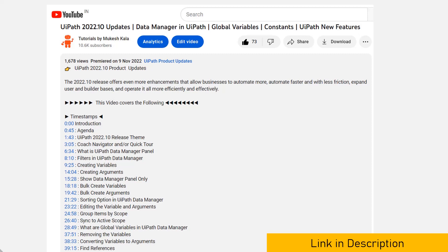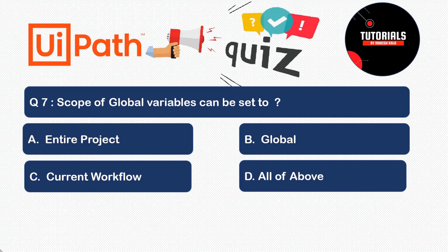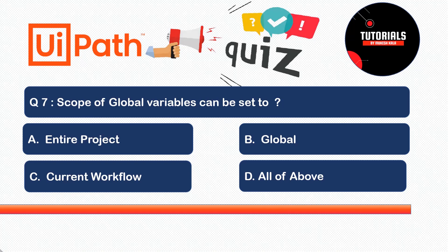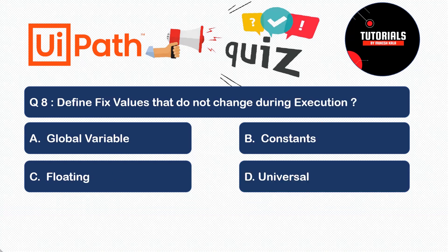Question seven: the scope of a global variable can be set to - is it (a) entire project, (b) global, (c) current workflow, or (d) all of the above? The correct answer is option (d) all of the above. For setting the scope of a global variable, you have all of these options available.